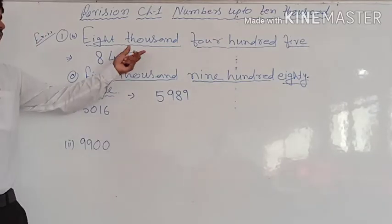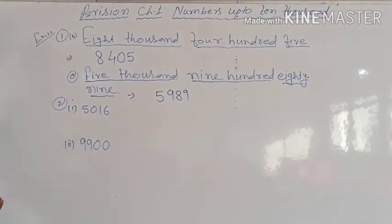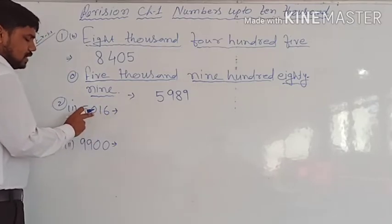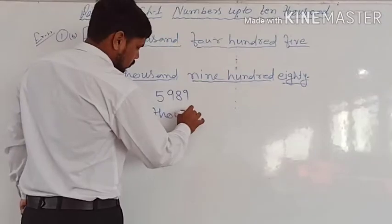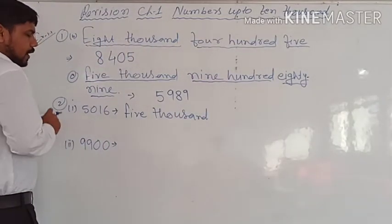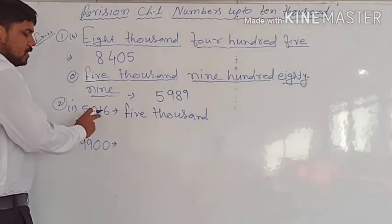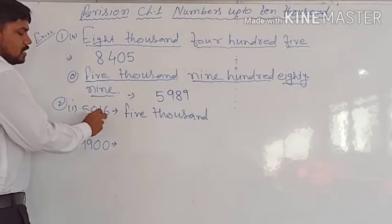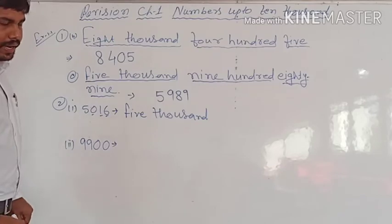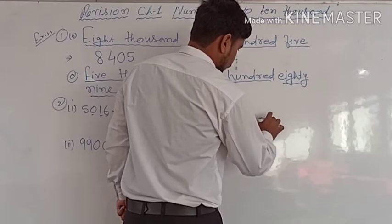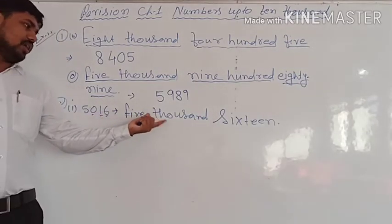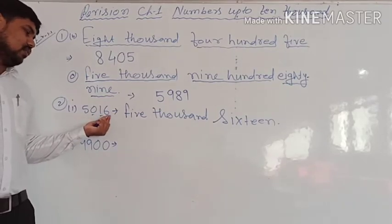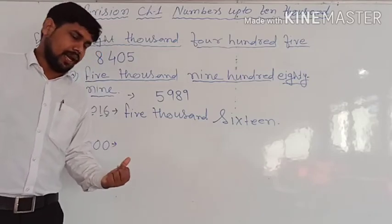This is how we write numbers when a number name is given. Now, if numbers are given and you have to write the number names: for example, 5,016 — thousands place has 5, so five thousand. Hundreds place has 0, leave it. Tens place has 1 and ones place has 6, so 16. So we write five thousand and sixteen.